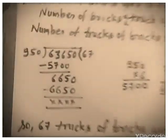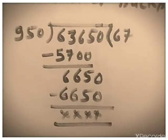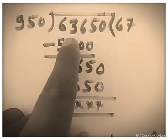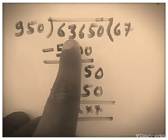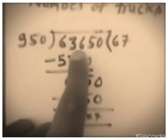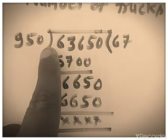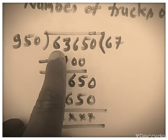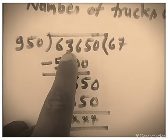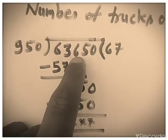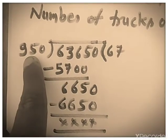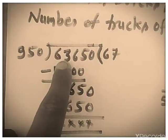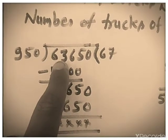We don't know the table of 950 and there are three digits in 950, so first we take three digits. You can see 636 is less than 950, so I will take four digits — 6,365. Now, 9 × 5 is 45 and 63 is greater than 45; 9 × 6 is 54.